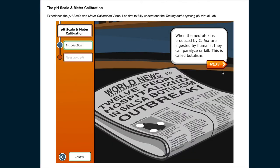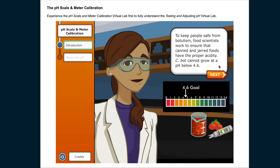When the neurotoxins produced by C. bot are ingested by humans, they can paralyze or kill. This is called botulism. To keep people safe from botulism, food scientists work to ensure that canned and jarred foods have the proper acidity.